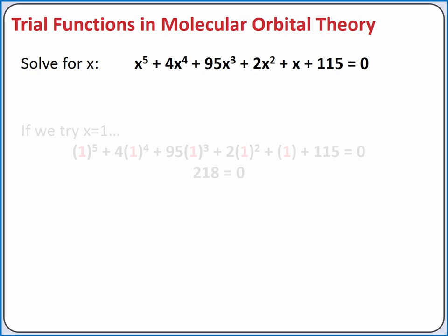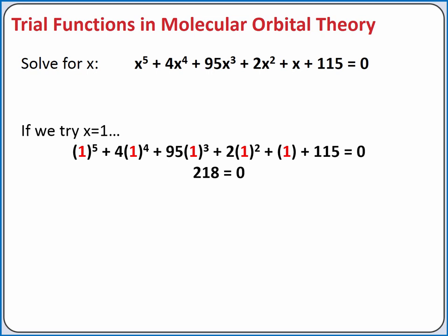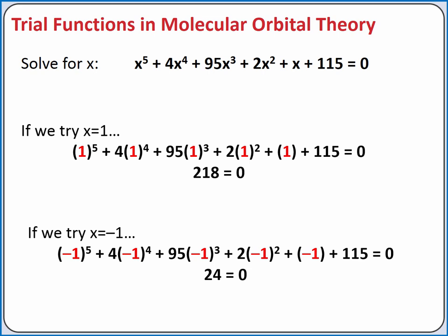If you plug 1 in for x, you would get 218 equals 0 — not the right answer. Next, you might guess that x equals negative 1. If you plug this in, you would get 24 equals 0, which is closer. You could continue in this manner until you've found the right answers.